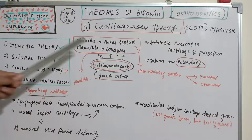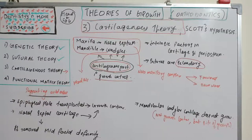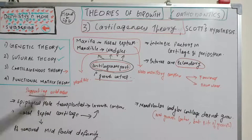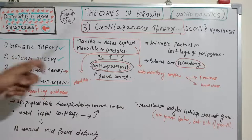For the mandible, the condylar cartilage provides evidence through transplantation studies: when the epiphyseal plate is transplanted to another site, growth continues. This was not the case in sutural theory — when sutures were transplanted, growth did not occur. But the epiphyseal plate, when transplanted, continued to grow. Similarly, nasal septal cartilage when transplanted also shows growth, and when it is removed, a midfacial deformity results, emphasizing the potential of cartilage in growth and development of the nasomaxillary complex and mandible.